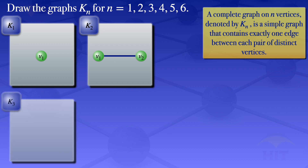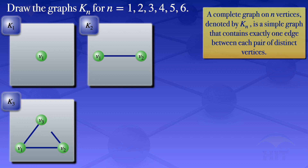I now move on to N equals 3, so K3. For K3, we will be looking at a graph with 3 vertices: vertex 1, vertex 2, vertex 3. For it to be a complete graph, we will have exactly one edge between each pair of distinct vertices. So I draw an edge between V1 and V2, then V1 and V3. Then looking at V2, we have V2 and V3. The graph is now complete.